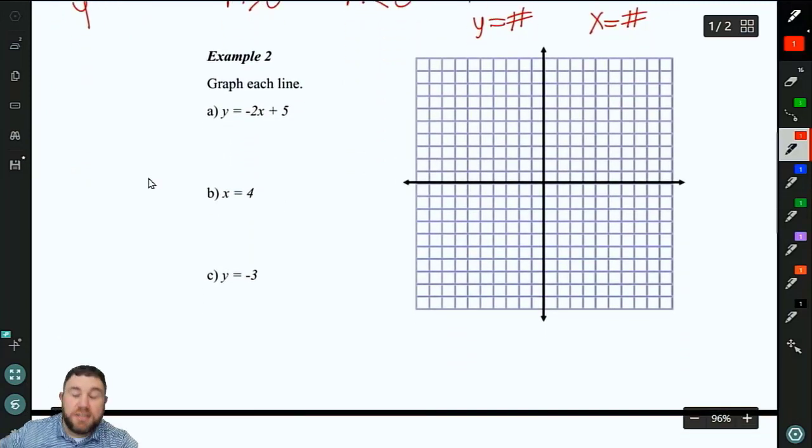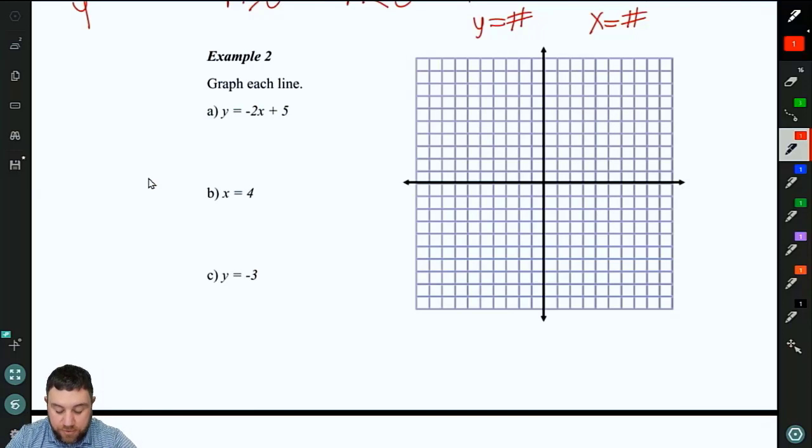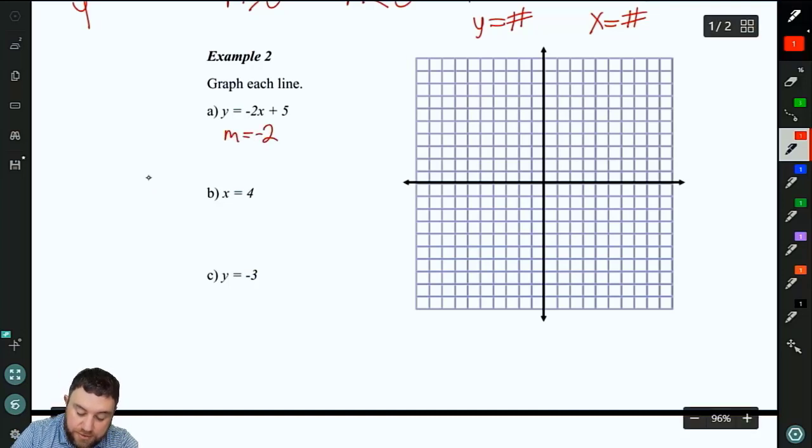All right. So we're going to graph an example of each of these, of slope intercept form, horizontal and a vertical line. So in 2a, we've got a slope of negative 2. Remember that's negative 2 over 1. And we've got a y-intercept of 5. Now our y-intercept is our starting point. So we put a dot on the y-axis at 5.